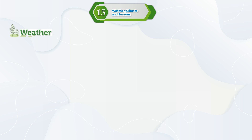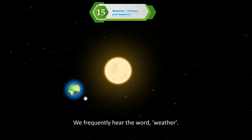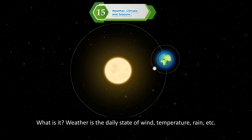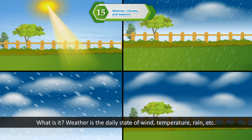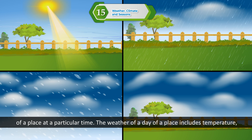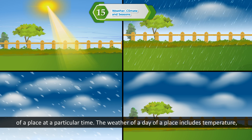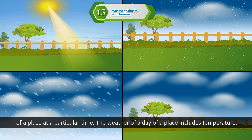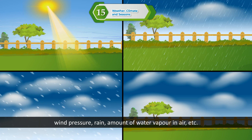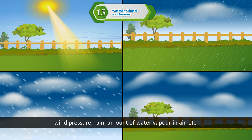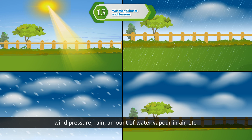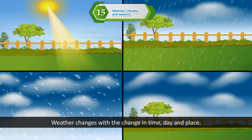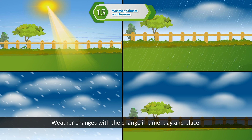Weather. We frequently hear the word weather. What is it? Weather is the daily state of wind, temperature, rain, etc. of a place at a particular time. The weather of a day includes temperature, wind pressure, rain, amount of water vapour in air, etc. Weather changes with a change in time, day, and place.